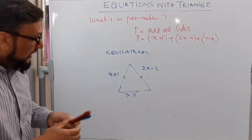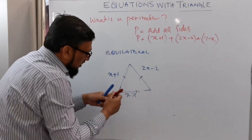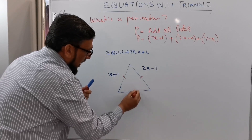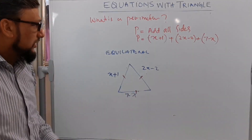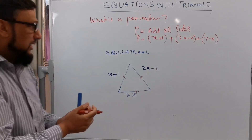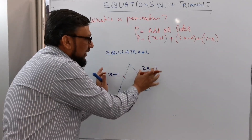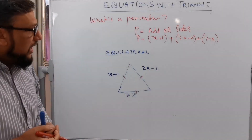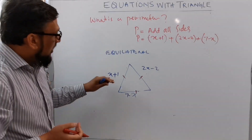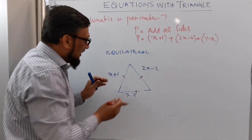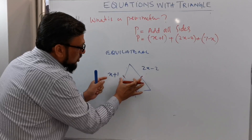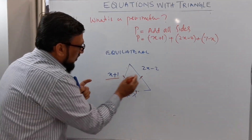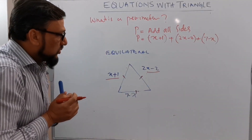In this scenario, we know that all three sides are equal — the values look different but the sides are equal. So I'm taking two of the sides: x plus 1 and 2x minus 2, and setting them equal to each other.